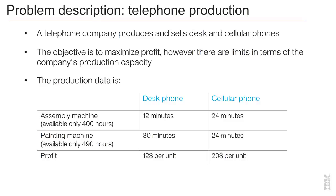A telephone company produces and sells two kinds of telephones: desk and cellular phones. Each type of phone is assembled and painted by the company. The objective is to maximise profit, and the company has to produce at least 100 of each type of phone. There are limits in terms of the company's production capacity, and the company has to calculate the optimal number of each type of phone to produce while not exceeding the capacity of the plant.